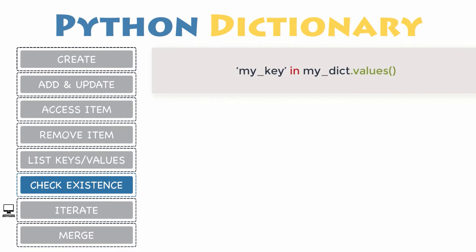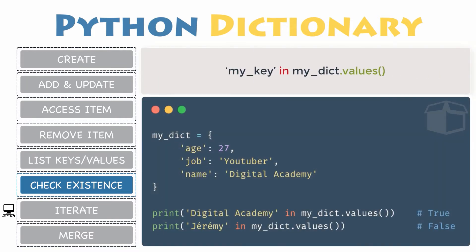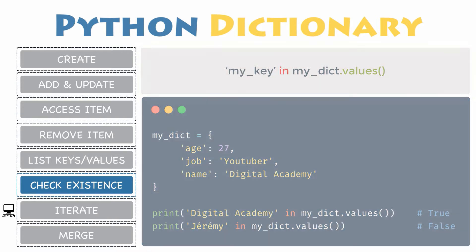On the other hand, to check whether a certain value exists in a dictionary, you must use the in operator combined with the values method. Here are a few examples before you start practicing on your own.